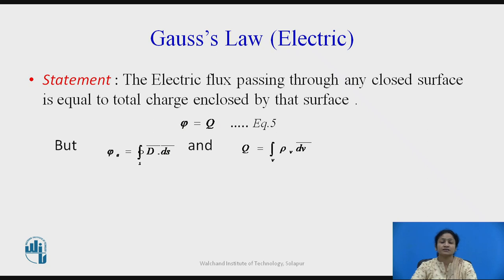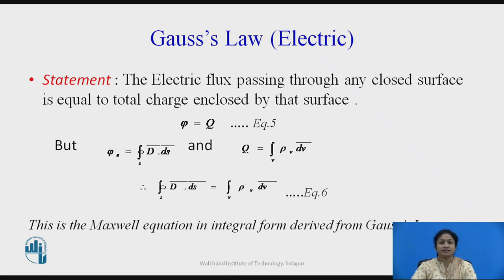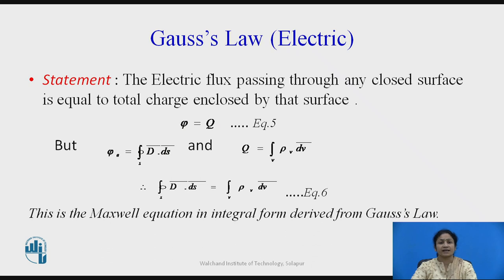Q is the charge distribution over the volume. When we substitute psi and Q into the equation, it will reduce, and equation number 6 is Maxwell's equation in integral form derived from Gauss's law.